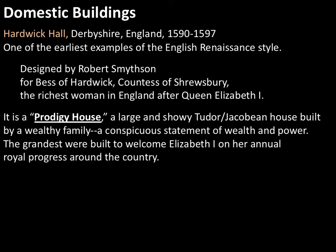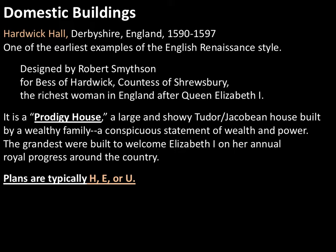The royal progress is where the king or queen takes everyone in the court and all their servants and literally parades around the country, stopping over at your house for a week or so — moving from house to house. It was a way for the royals to get out of hot, gross, urban London and into the countryside, and a way for the wealthiest people to showcase their wealth and essentially get their selfies with the queen. The ground plans of these prodigy houses were typically either H-shaped, E-shaped, or U-shaped, but also highly irregular because they had areas that projected in and out, plus corner towers creating up and down projections.